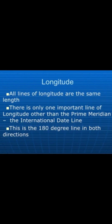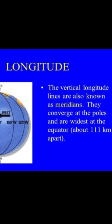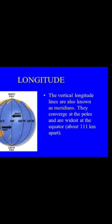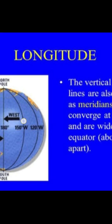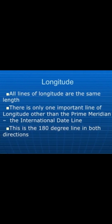Now we come to longitude. Longitude lines are also known as meridians — they connect the poles and are about 111 kilometers apart at the equator. Longitudes run vertically from north to south and divide the earth into west and east.